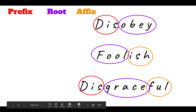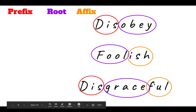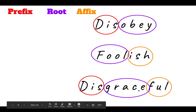So these are some examples of words where I've circled the parts. Disobey has the prefix dis and the root obey — it means to not obey something. Foolish: the root is fool and the affix is ish, so it means acting like a fool. Disgraceful means something that is not graceful — the parts are dis (the prefix), grace (the root), and ful (the affix).